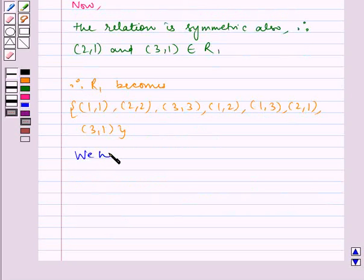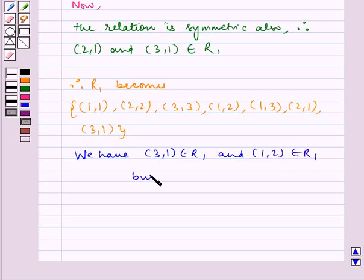We have (3,1) ∈ R₁ and (1,2) ∈ R₁, but (3,2) ∉ R₁. Therefore, R₁ is not transitive.